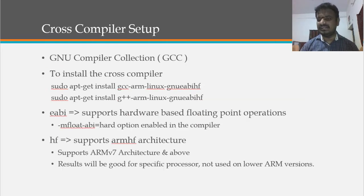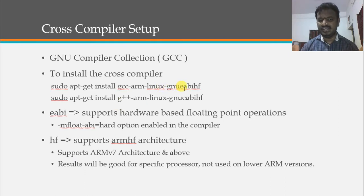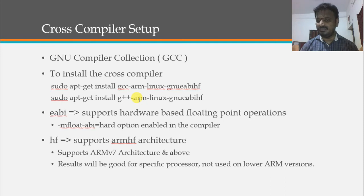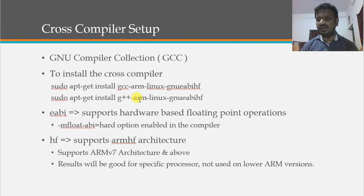We also need the cross-compiler: gcc-arm-linux-gnueabi and g++ for C++. For U-Boot we specifically need gcc-arm-linux-gnueabihf — where 'eabihf' adds hardware floating point support for ARMv7 and above. Note that an eabihf-compiled binary cannot run on ARMv6 or ARMv5 architecture-based processors due to lack of backward compatibility.